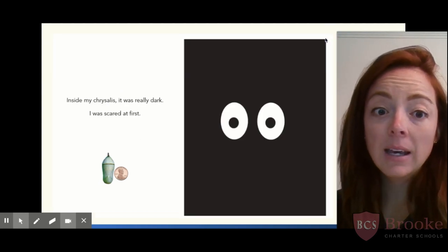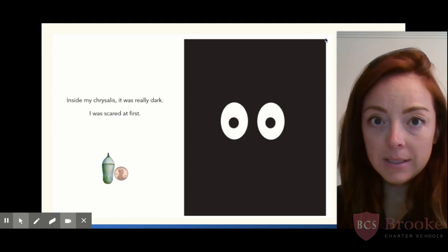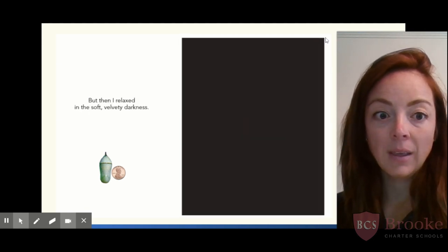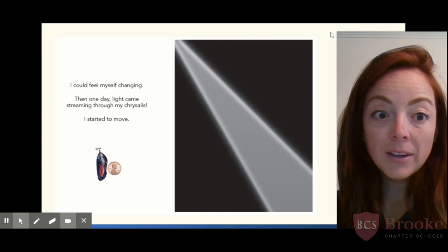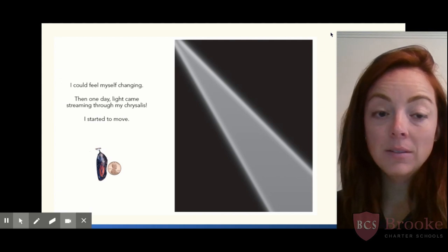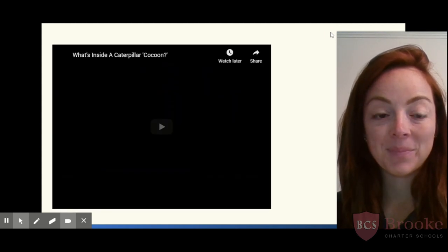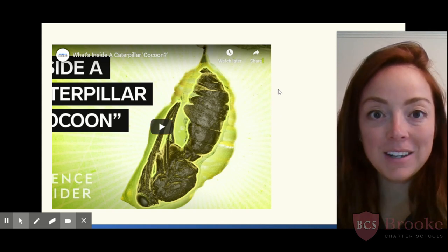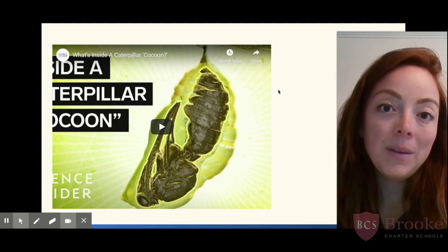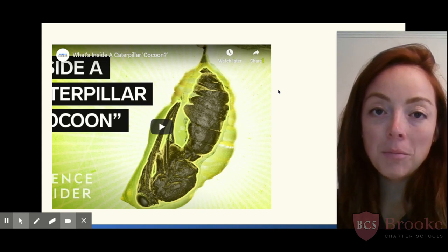Inside my chrysalis, it was really dark. I was scared at first. But then I relaxed in the soft, velvety darkness. I could feel myself changing. Then, one day, light came streaming through my chrysalis. I started to move. We're not sure exactly what happens next, but I think you probably have a prediction. We'll read the rest next week. But now we want to listen really carefully and understand more about what's happening inside a chrysalis.